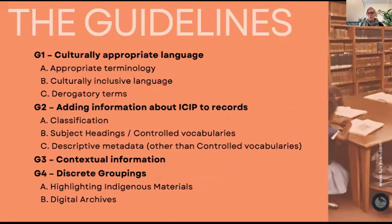So what are the guidelines? There are four basic guidelines. Guideline one relates to appropriate terminology, culturally inclusive language and derogatory terms. Appropriate terminology looks at things like why you would use 'First Nations' as opposed to 'Aboriginal and Torres Strait Islander,' 'Indigenous' or 'First Peoples.' In the library context, if you're using Library of Congress subject headings you're defined within that space — the two terms there are 'Aboriginal Australians' and 'Torres Strait Islanders.' You need to consider the environment in which you're adding descriptions for your materials. Culturally inclusive language is quite self-explanatory and relates to how our language moves and changes over time.